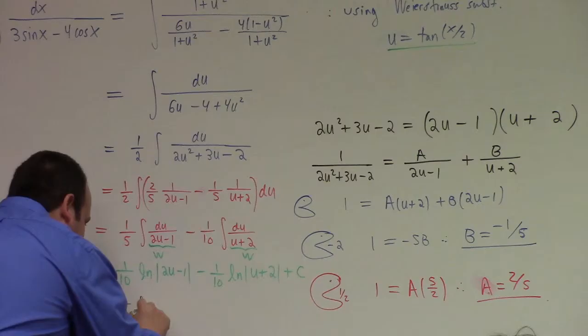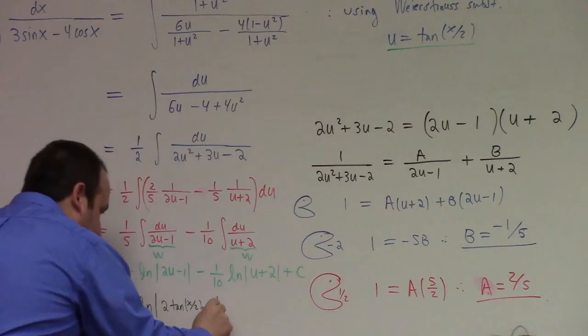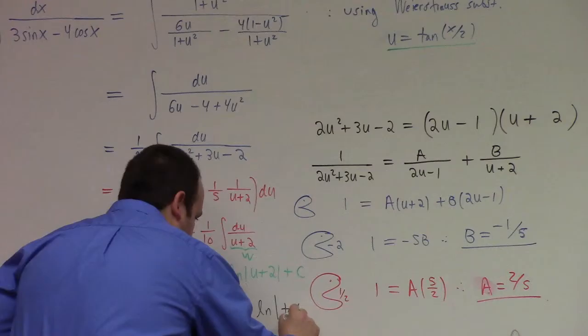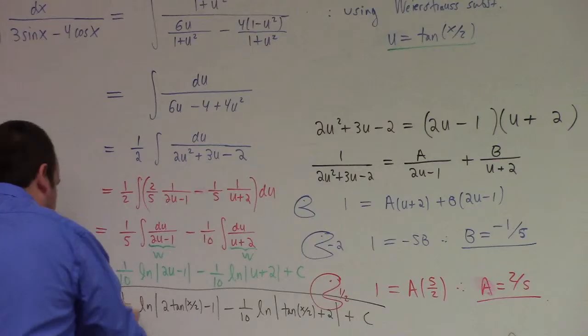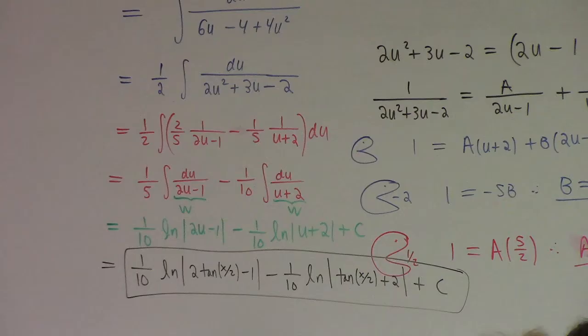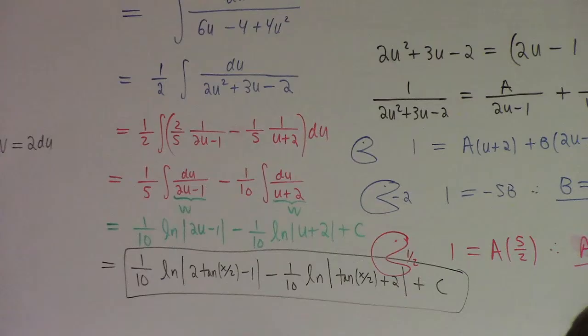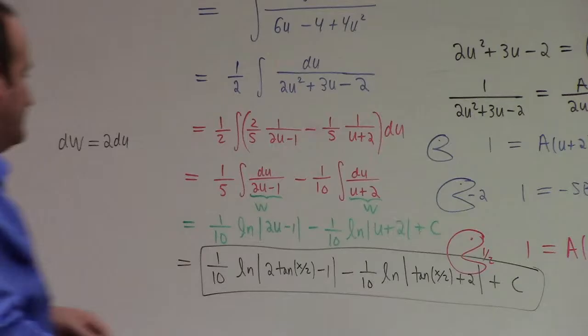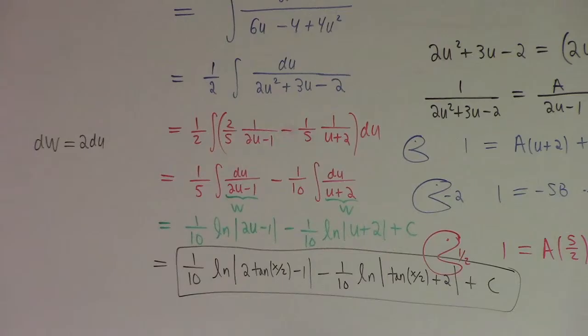The finishing move is to back-substitute u equals tangent of x over 2. That gives one tenth the natural log of the absolute value of 2 tan(x/2) minus 1, minus one tenth the natural log of the absolute value of tan(x/2) plus 2, plus a constant. The 1 fifth became 1 tenth because dw is 2 du, so du is dw over 2.